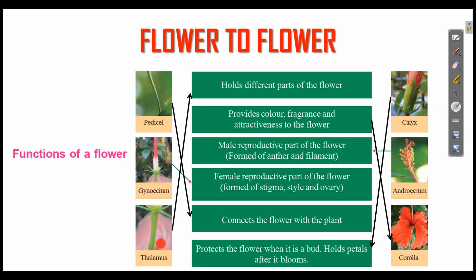Then next is Thalamus. Thalamus holds the different parts of the flower. Then next is Calyx. The function of Calyx is to protect the flower when it is in bud and to hold the petals after it blooms.